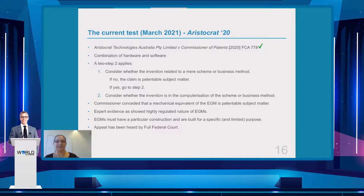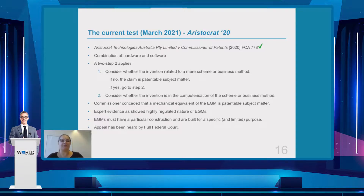Thank you, Simon, and welcome to my office, everyone. The case law as a whole was considered in the Aristocrat case in 2020. In this case, Aristocrat Technologies appealed the decision of the commissioner for patents that their invention was not for patentable subject matter. The invention was an electronic gaming machine comprising a combination of hardware and software. In reviewing all the case law, the court distilled a two-step test. Step one: consider whether the invention is related to a mere scheme or business method. If no, then your claim is for patentable subject matter. If yes, go to step two.